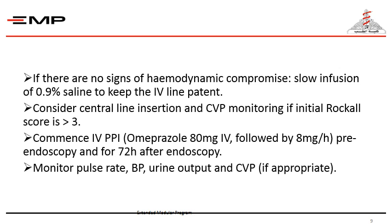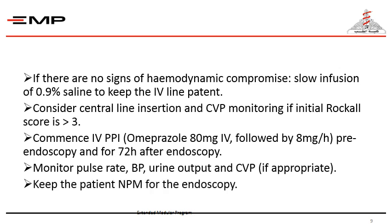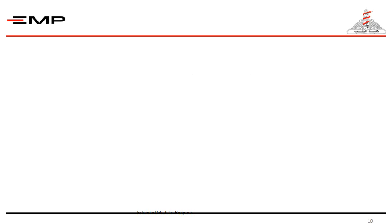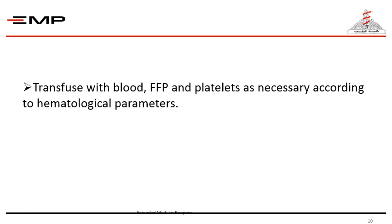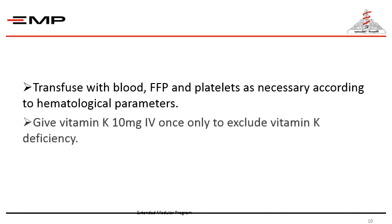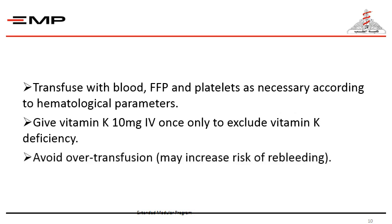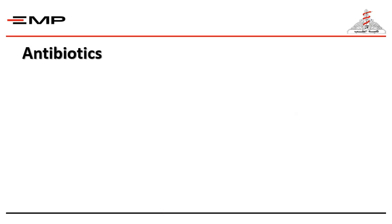We should monitor pulse rate, blood pressure, urine output, and CVP if inserted, for all patients. We want to make sure the patient is hemodynamically stable at all times, and we keep the patient nil by mouth. We transfuse with blood, fresh frozen plasma, and platelets as necessary according to hematological parameters. We also give vitamin K 10 milligrams intravenously once only to exclude vitamin K deficiency. We should avoid over-transfusion, as this may increase the risk of re-bleeding.